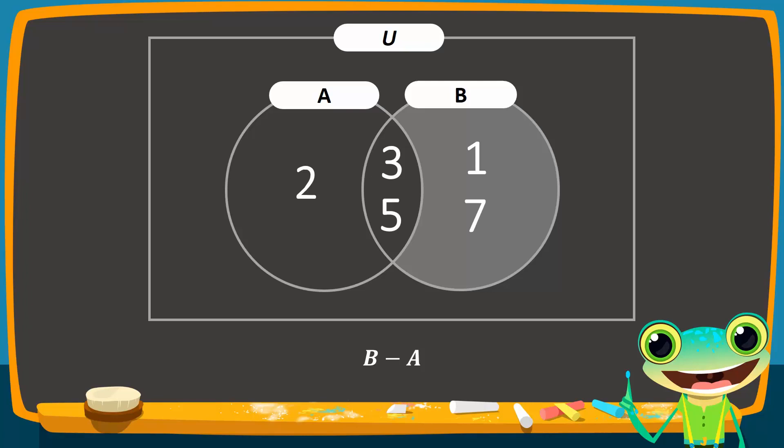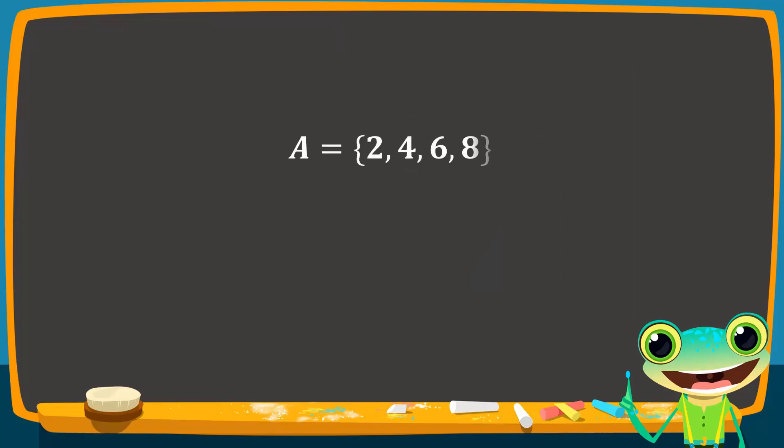What if the two sets are disjoint instead of overlapping? Study these two sets. Set A contains the even numbers 2, 4, 6, and 8, while set B contains the odd numbers 1, 3, 5, and 7.